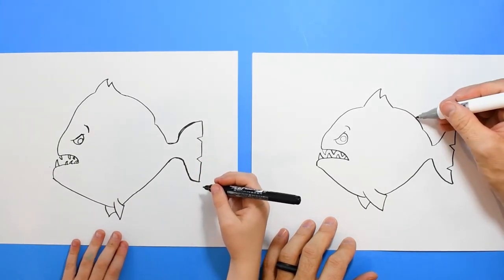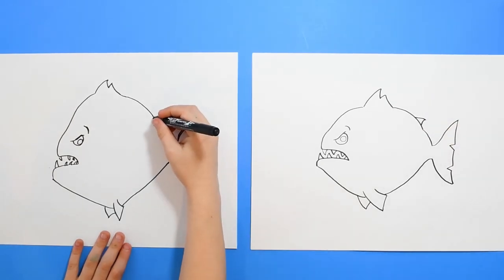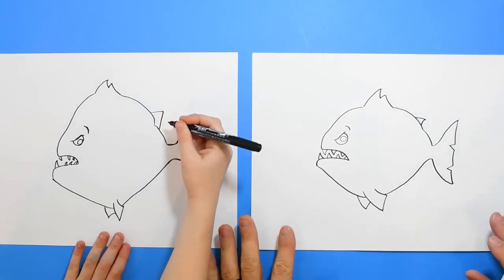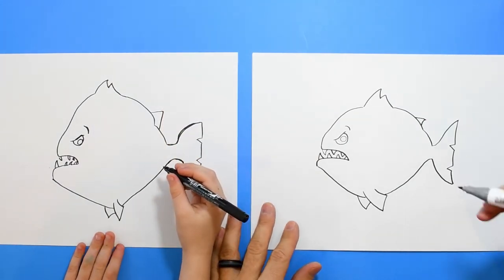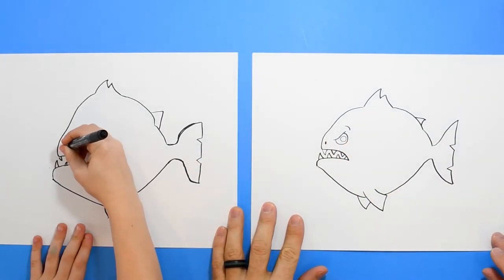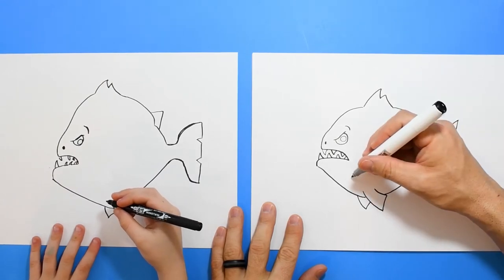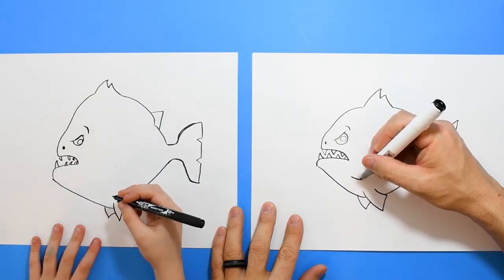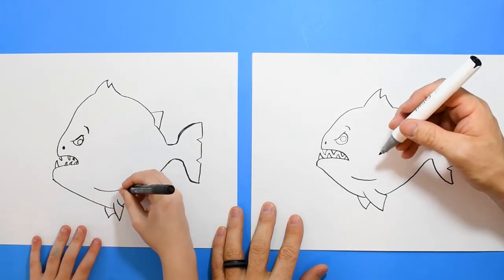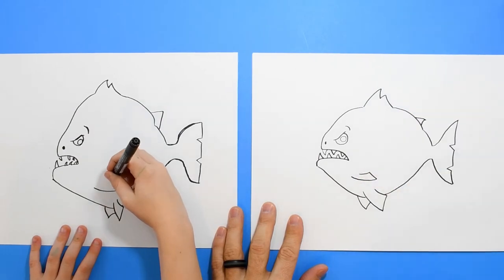I'm going to add one little fin back here. It's going to go like a little triangle. Would you like to swim in the water with one of these guys? Yeah. Yeah, me too. Let's do a little nostril dot. So piranhas, they have another little fin right here. So we're going to add it. I'm going to go like that. Up and just kind of let it float out there.